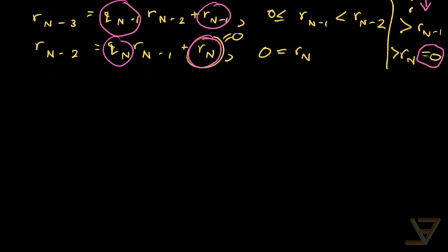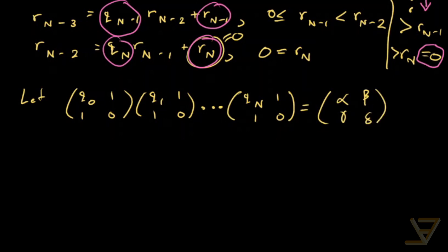If we let the product of matrices [[q0, 1], [1, 0]] times [[q1, 1], [1, 0]] all the way through to [[qn, 1], [1, 0]], if we let that product be equal to [[alpha, beta], [gamma, delta]], then what we find is that [[alpha, beta], [gamma, delta]] times the column vector [r(n-1), 0] is equal to [a, b].